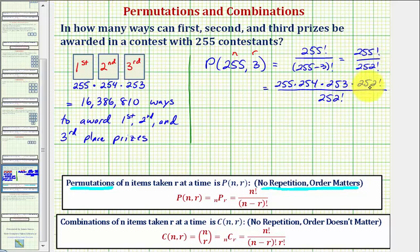252 factorial divided by 252 factorial simplifies to one, and notice how we're left with the same product that we found using the counting principle.